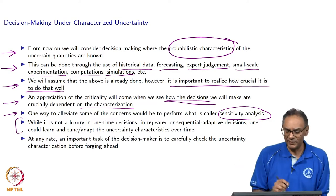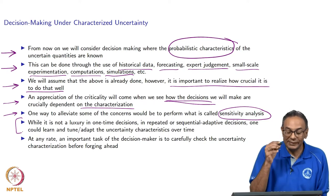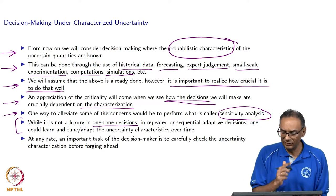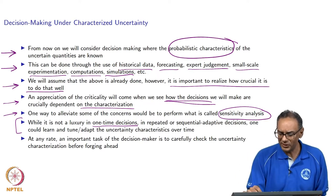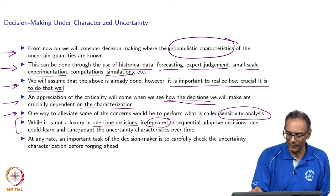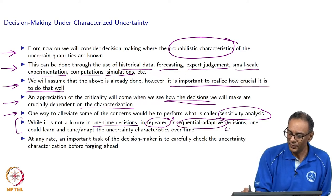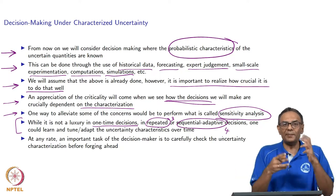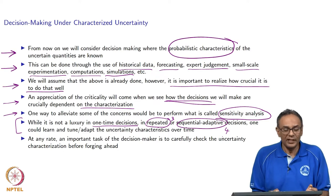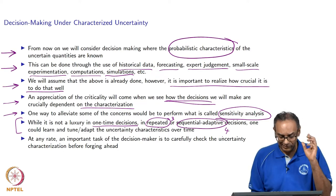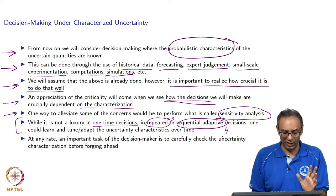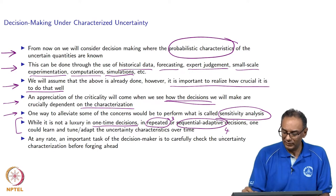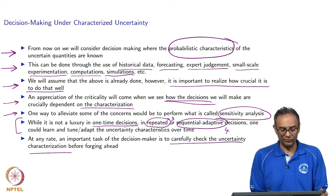These types of problems are what are called one-time decisions — I only make a decision once and do not repeat. When we do repeated or sequential adaptive decisions, that will be in topics 3 and 4. In a one-time decision, you do not have the luxury to learn and adapt. You only get one chance. Especially when making a one-time decision, it is important to check the characterization before forging ahead.